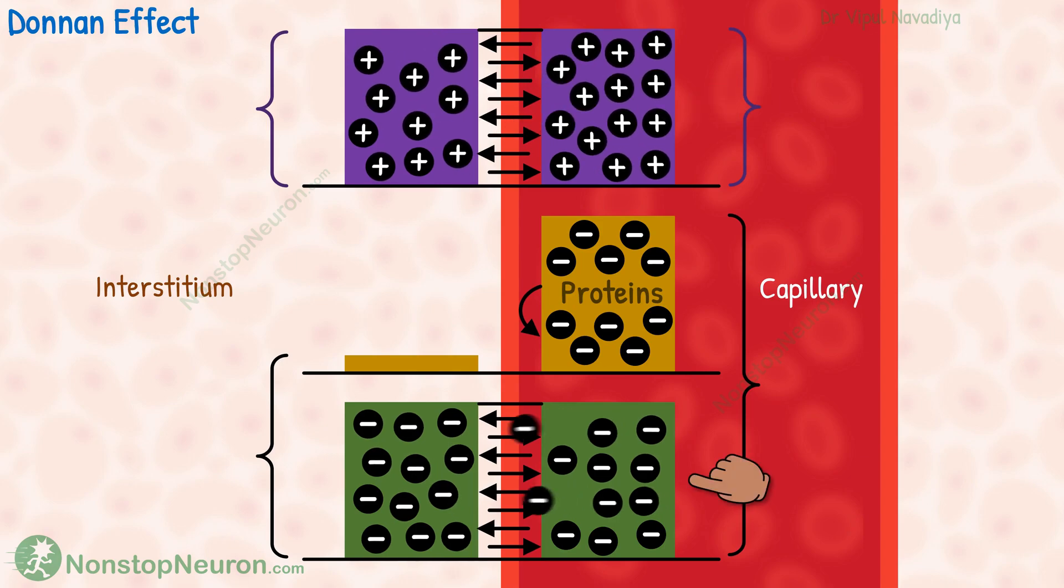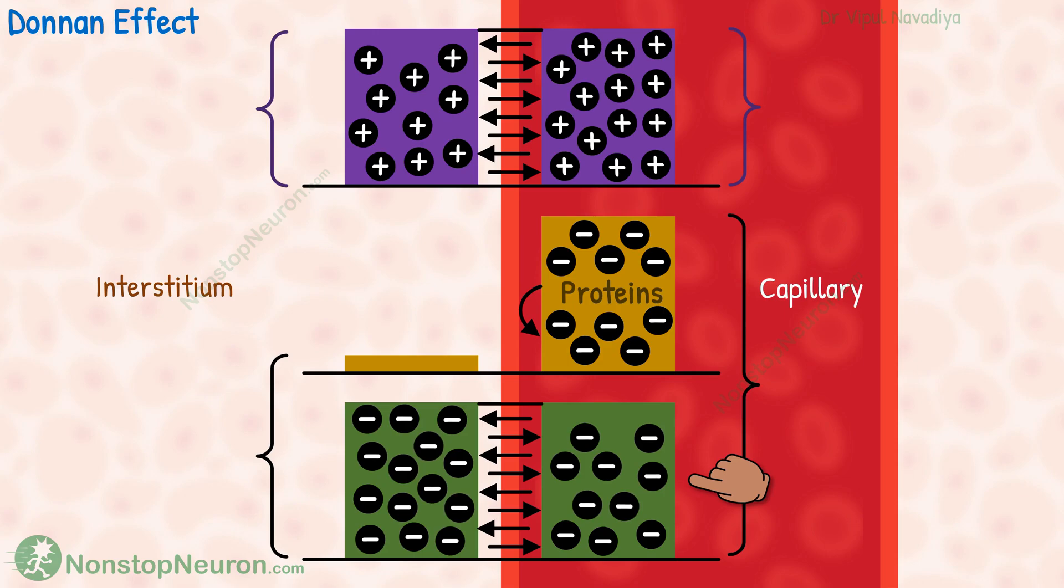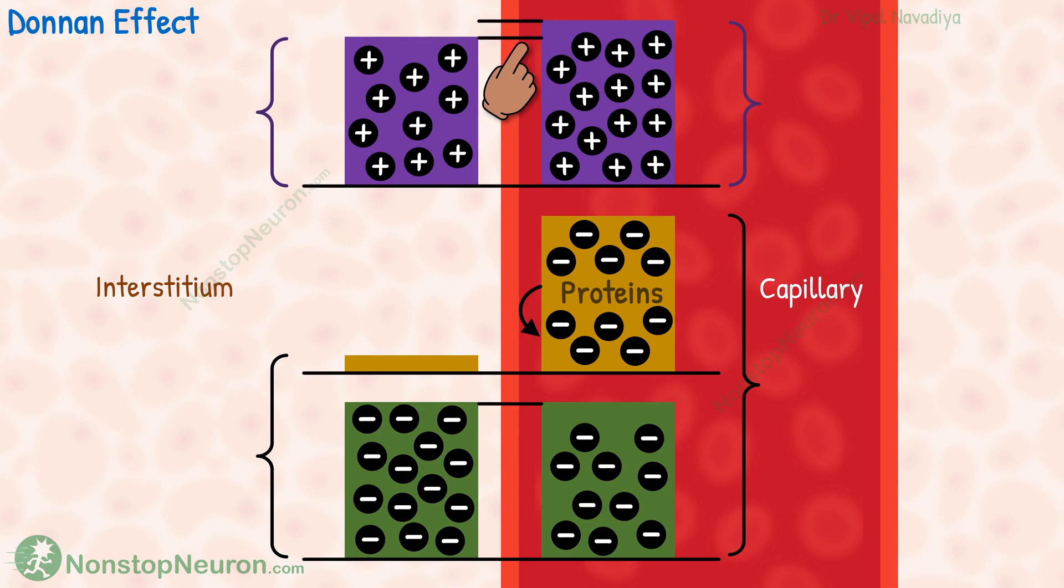At the same time, the negatively charged ions in the plasma are repelled. So the positively charged ions have a slightly more concentration in plasma than in the interstitium. And negatively charged ions have slightly less concentration.